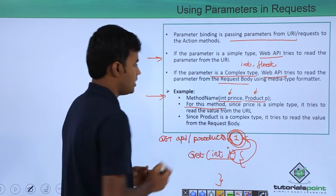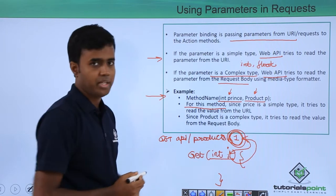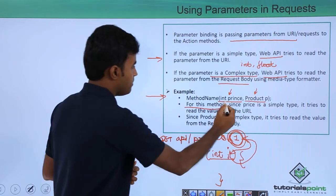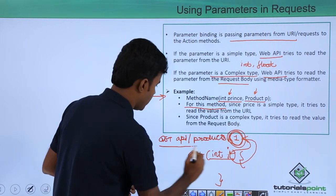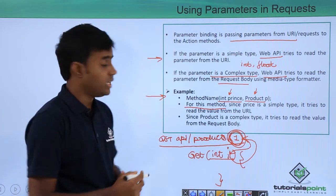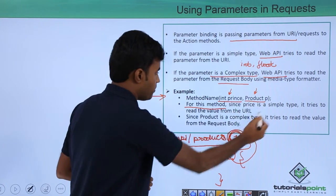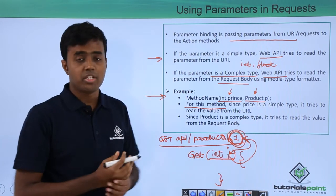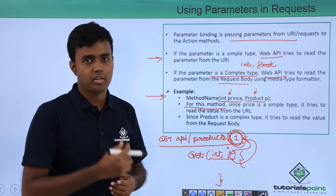For this method, since price is a simple type, it tries to read the price value from the URL and since product is a complex type, it tries to read the value of the product from the request body which has been sent along with the request URL.